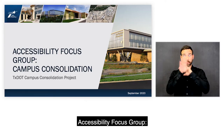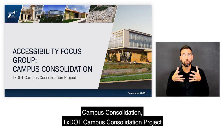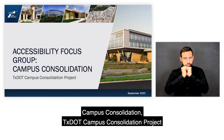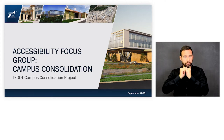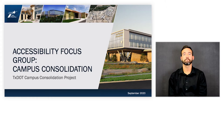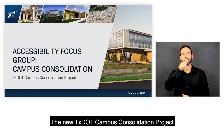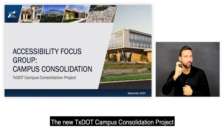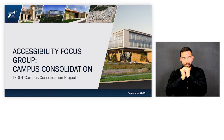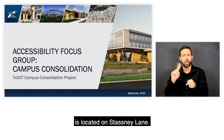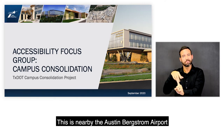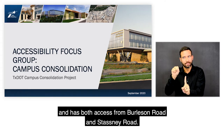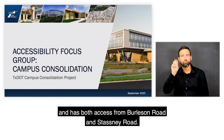Accessibility Focus Group, Campus Consolidation, TxDOT Campus Consolidation Project. The new Texas Department of Transportation Campus Consolidation Project is located on Stastny Lane, nearby the Austin-Bergstrom Airport, and has both access from Burleson Road and Stastny Road.